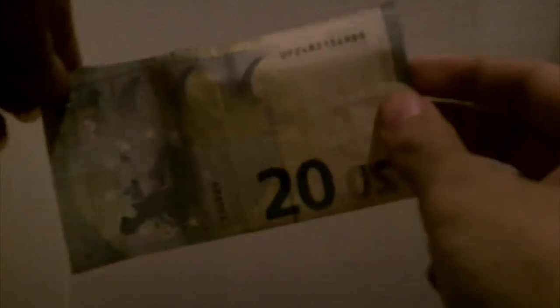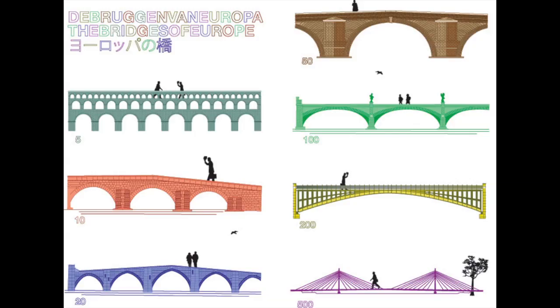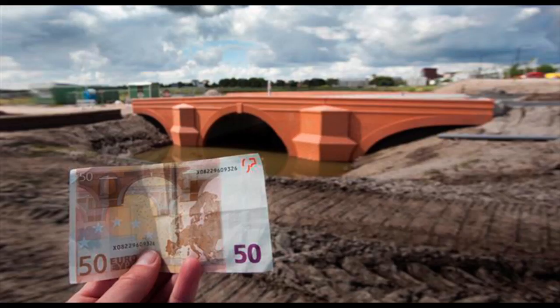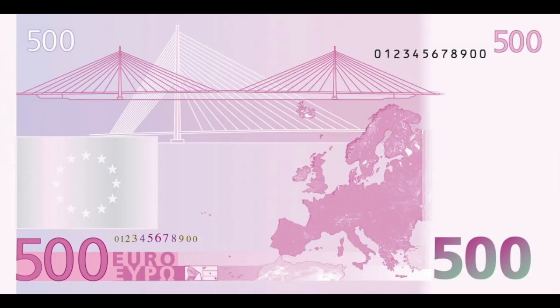Instead, what they have on the front are fancy arches, and on the back, a bunch of bridges. Those particular arches and bridges are not real — they're just illustrations of generic designs that kind of just look pretty. Well, the bridges are real now, but they were made as a joke in a real estate development in the Netherlands. It is also observed that the higher the value of the bill, the more modern the bridge.